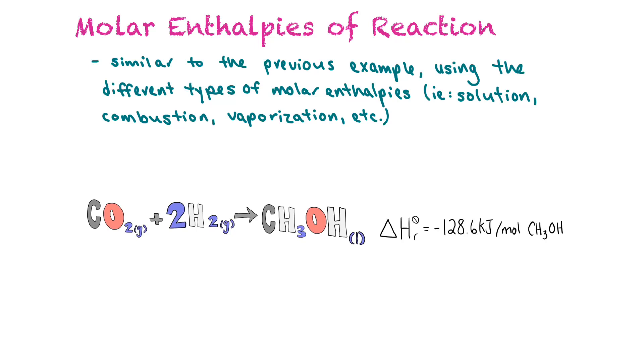We can also record or represent it with molar enthalpies of reactions. It's similar to the previous example, except we use the different types of molar enthalpies, like the molar enthalpy of solution, of combustion, of vaporization, and so on. In this example, we're listing the molar enthalpy of reaction for methanol, so we have the delta heat of reaction is negative 128.6 kilojoules per mole of methanol.